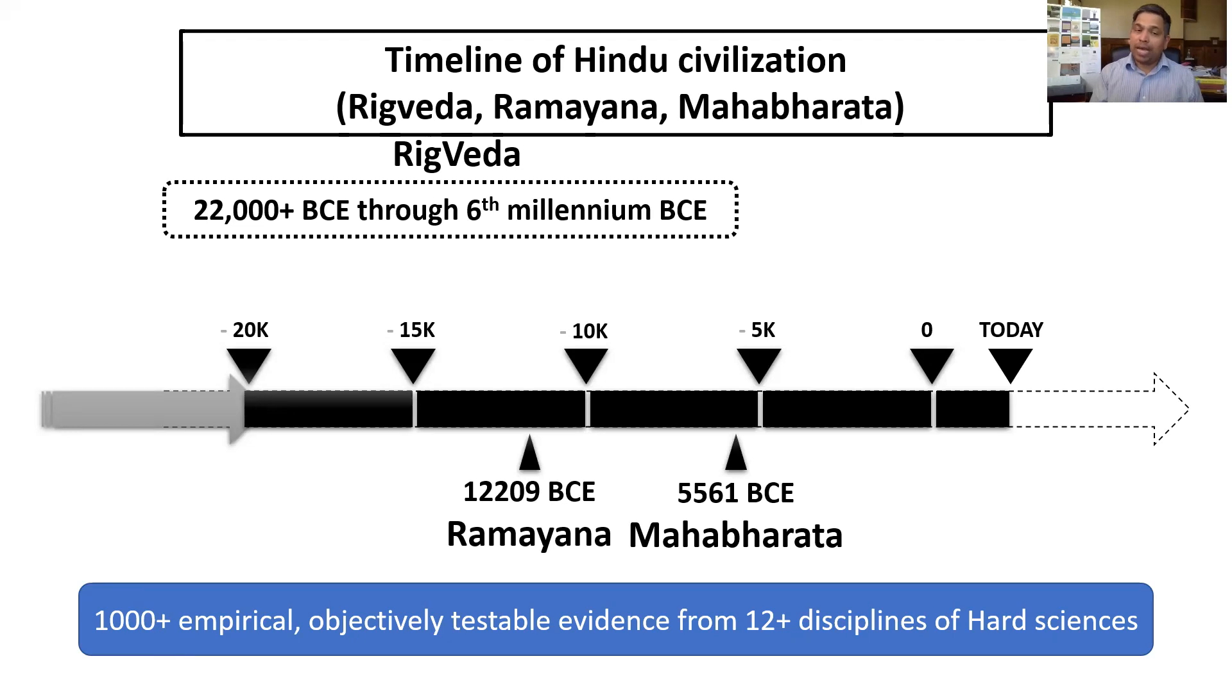The hydrology evidence with respect to Saraswati and other rivers such as Yamuna and Satlaj, and geology, geophysics, geochemistry, and morphodynamics of rivers evidence tells us that the oldest portions of Rigveda appear to be definitely older than 22,000 BCE. This has been validated by multiple, very rich empirical evidence from multiple different disciplines of hard sciences.